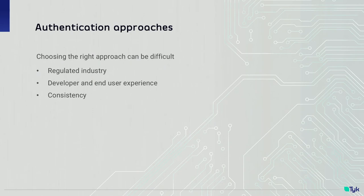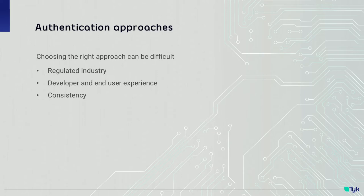There are many options available for API authentication. It can be quite difficult to choose the right approach for your API, so here are some general points. If you're in a regulated industry such as banking, the regulations may stipulate that you adhere to particular security standards — make sure you're following these and are sufficiently tested. Think from the consumer's perspective: how are you expecting them to interact with your API? If it's via a website, you may need to support an interactive authentication workflow, but if it's machine-to-machine, you should take a different approach. Also, try to be consistent across your APIs.